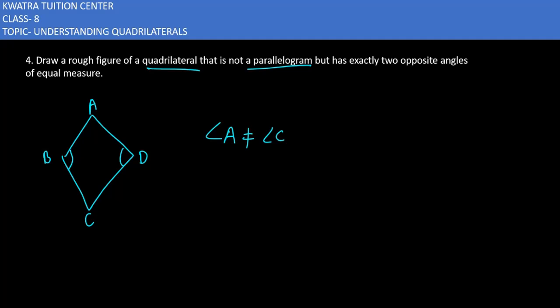Angle A is not equal to angle C, but angle B is equal to angle D. And this is the case of a kite.